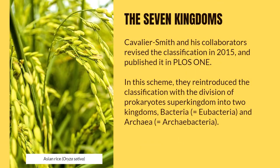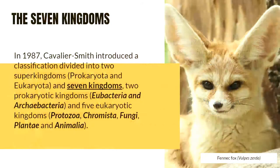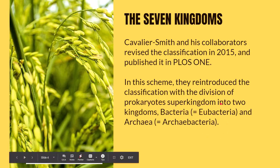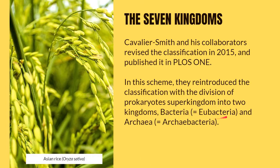In 2015, Cavalier-Smith and his collaborators revised this initial Seven Kingdoms system and published it in PLOS ONE, a noted publication for scientific research papers. In this Seven Kingdoms scheme, they reintroduced the classification with the division of the prokaryotes' superkingdom into two kingdoms: bacteria, the true bacteria or traditionally defined bacteria, and archaea, from domain archaea, which used to be under archaebacteria.